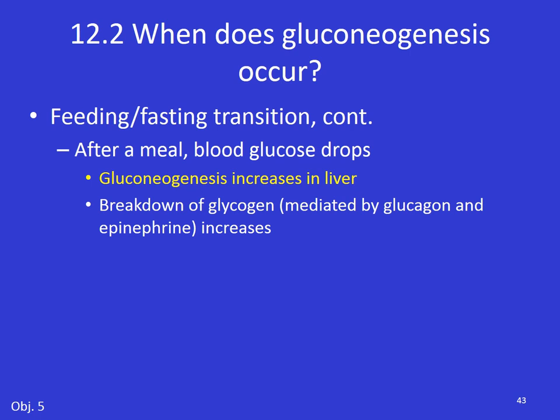What about after a meal? Your blood glucose is going to drop if you're not eating, and gluconeogenesis will increase in the liver — if we don't have enough blood glucose, let's make some new stuff. Concurrently we're going to break down glycogen, mediated by glucagon and epinephrine. Breaking down glycogen releases glucose into the bloodstream; the other option is to make brand new glucose via gluconeogenesis. These are basically our two options for maintaining stable blood sugar throughout the day: breakdown of glycogen and gluconeogenesis.